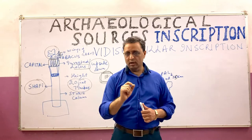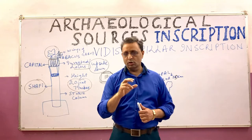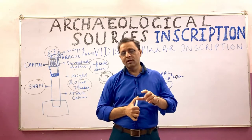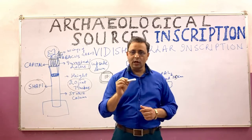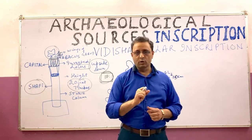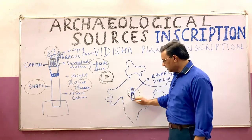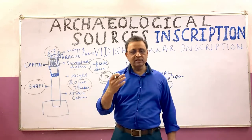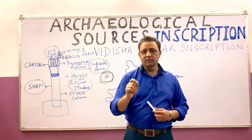The Besnagar Pillar Inscription was constructed by Heliodorus. Heliodorus was a Greek ambassador of King Antiochidas. Antiochidas was a Greek — specifically an Indo-Greek — ruler of the Punjab region, which was under foreign control at the time through the North West Frontier provinces. Heliodorus was sent as an ambassador to Bhagabhadra, and this pillar was erected around 113 BC.